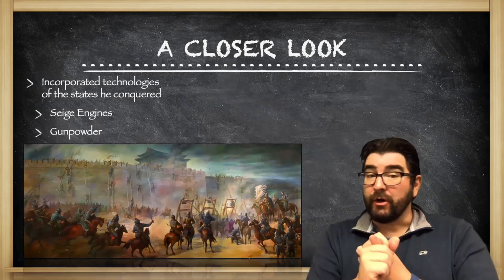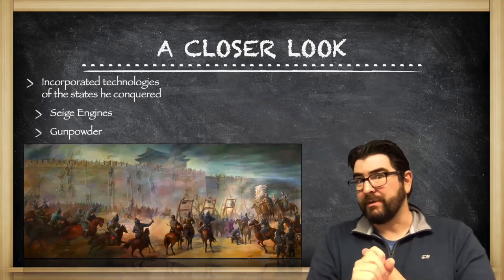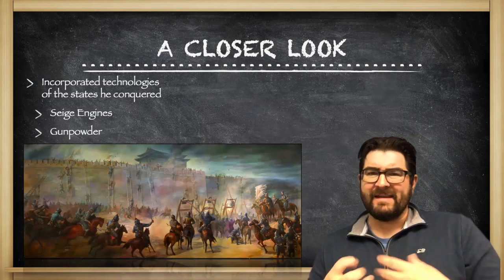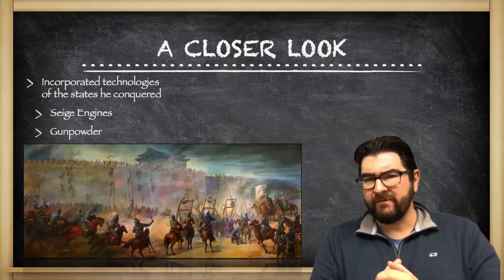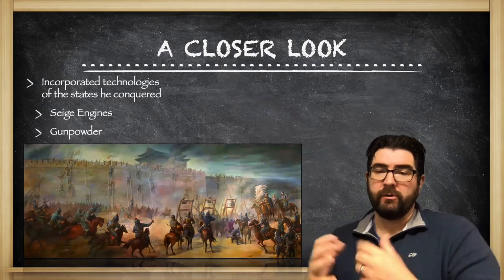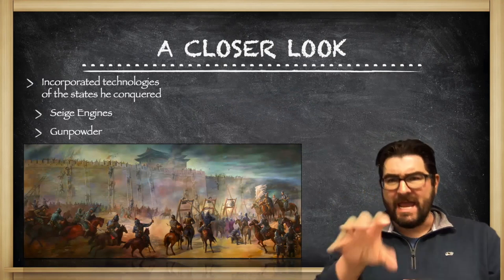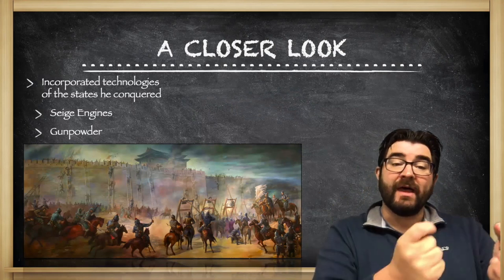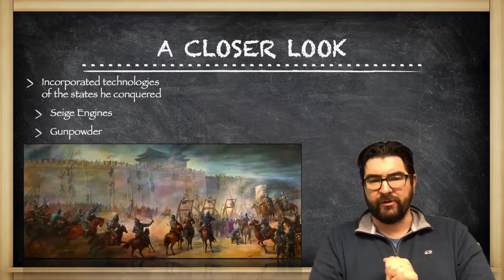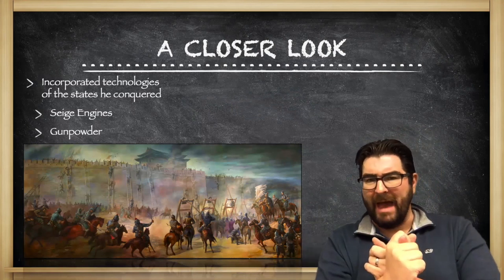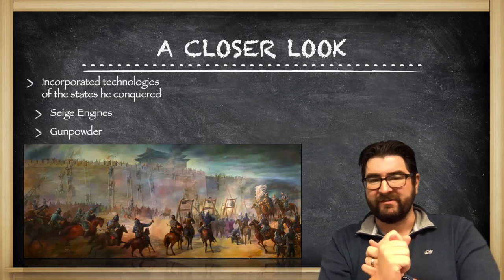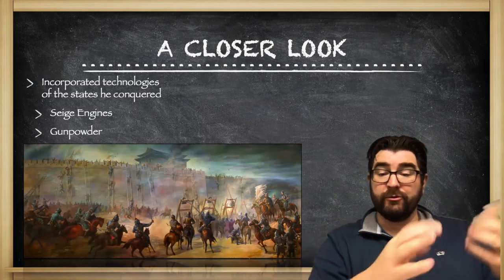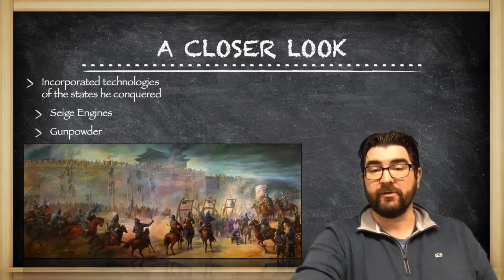The Mongols are going to use technologies from the places that they're conquering. I like to think of the Mongols as not necessarily builders of civilization, but borrowers of civilization. They're going to take ideas from the various places that they conquer and use them to expand their conquest further. For example, siege engines to batter down walls of cities, and gunpowder that they get from China will be used throughout Mongol conquests further to the west.